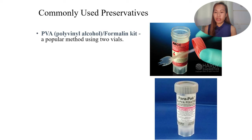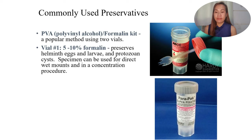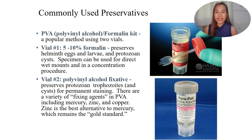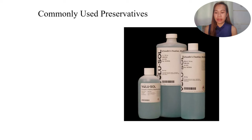We also have PVA (polyvinyl alcohol) or formalin kits — a popular two-vial method. The first vial contains 5-10% formalin, which preserves helminth eggs and larvae and protozoan cysts, but cannot be used for direct wet mounts or concentration procedures. The second vial contains polyvinyl alcohol fixative, which preserves protozoan trophozoites and cysts and can be used for permanent staining. In PVA, fixing agents include mercury, zinc, and copper — zinc is the best alternative to mercury, which remains the gold standard.